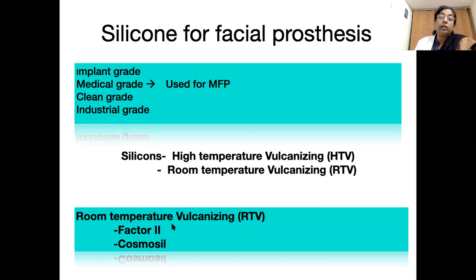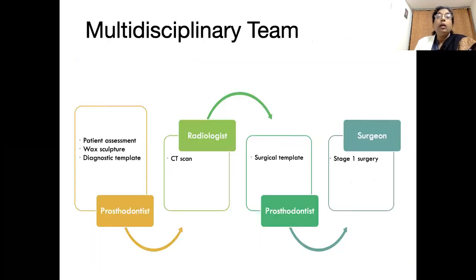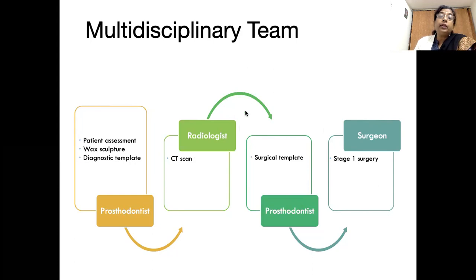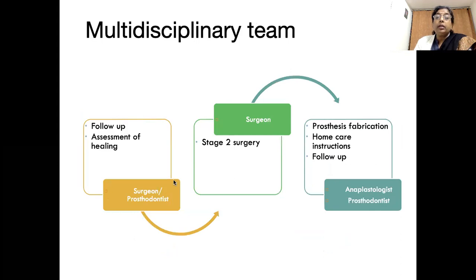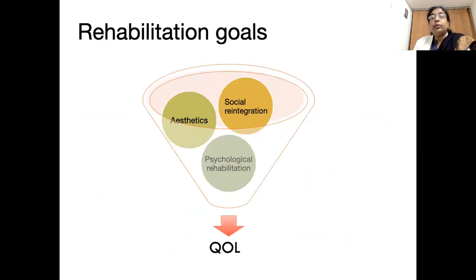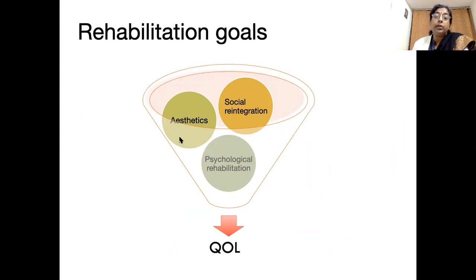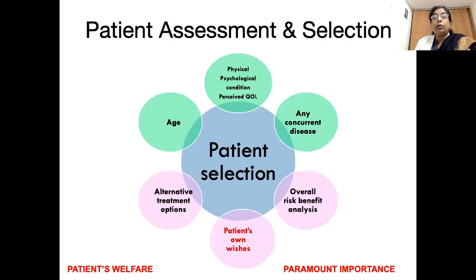In our institute, we use either Factor 2 or Cosmosyl. For successful rehabilitation of these patients, a multidisciplinary approach is required, with different specialists involved at different steps — prosthodontist initially, then radiologist, surgeon, and an anaplastologist. Our goal in rehabilitation is to achieve aesthetics acceptable to the patient so that their confidence increases, leading to social reintegration, psychological rehabilitation, and improvement in quality of life.